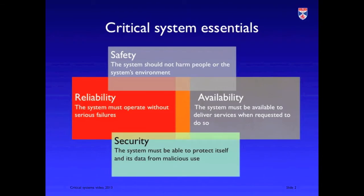The key difference between critical systems and other systems is that failure of a critical system can lead to loss of life, serious economic consequences, or environmental damage. Therefore the key characteristics of a critical system are those dependability characteristics such as safety, reliability, availability, and security.